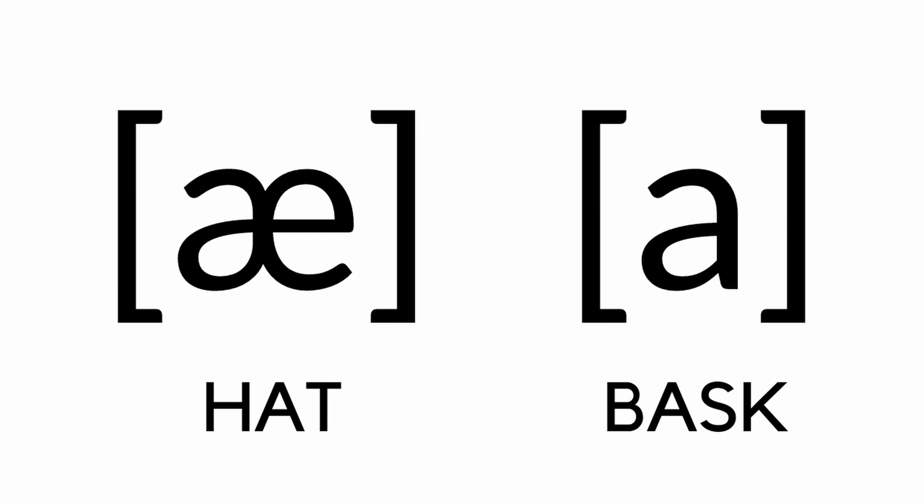Now, this next slide has two different symbols listed because they're very, very similar. The first one looks like an A and an E squished together — I believe it's called ash. This is the sound 'ah.' And then the A by itself is also an 'ah,' but it feels a little deeper, a little further back in the mouth. The first example I have listed is 'hat,' and the second one is 'bask.' I want you to say those words right now, just so you can feel the difference in your mouth. We have 'hat,' a little higher, and 'bask,' which feels a little deeper, a little further back.